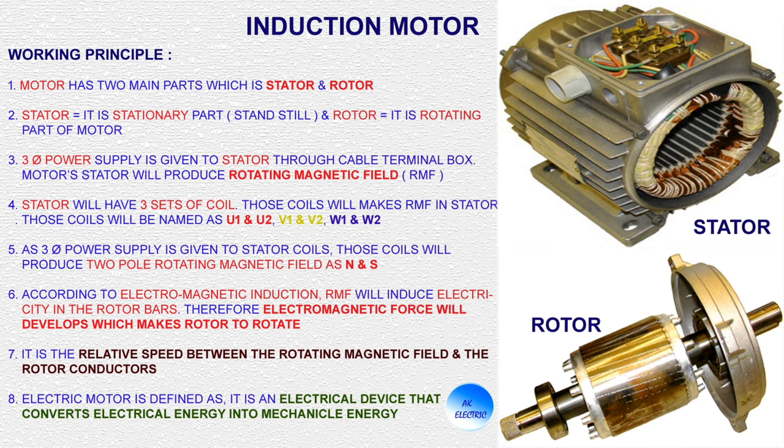As you see in the diagram, motor has two main parts: stator and rotor, where stator is a stationary part which is standstill and rotor is a rotating part. On the top side of the motor there is a terminal box where we can give the three-phase power supply, which produces the rotating magnetic field in the stator. The stator has three sets of coil: U1 and U2, V1 and V2, and W1 and W2.